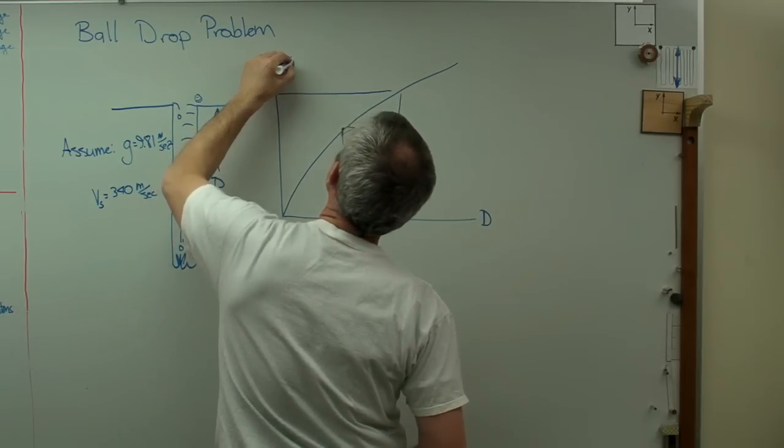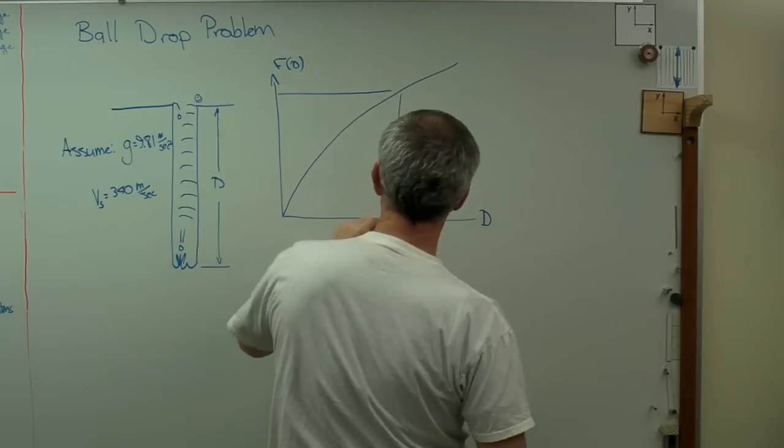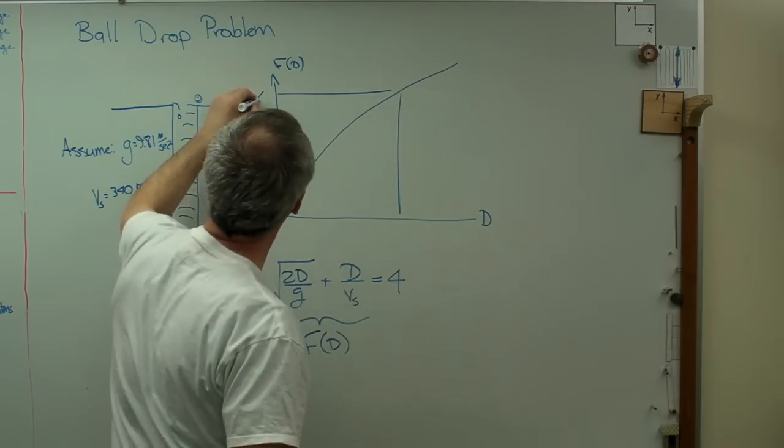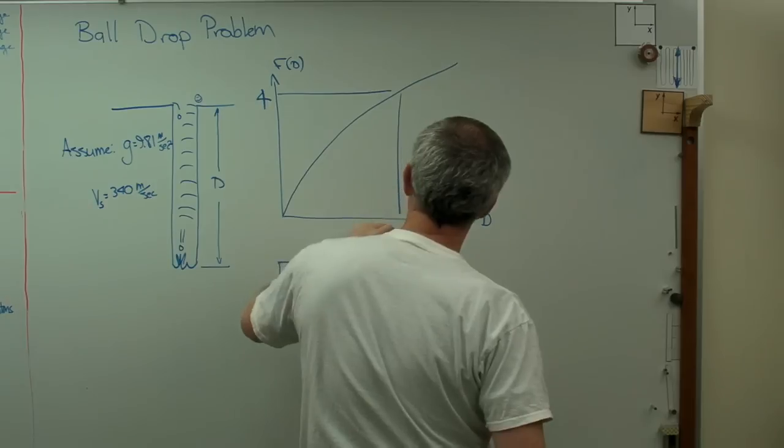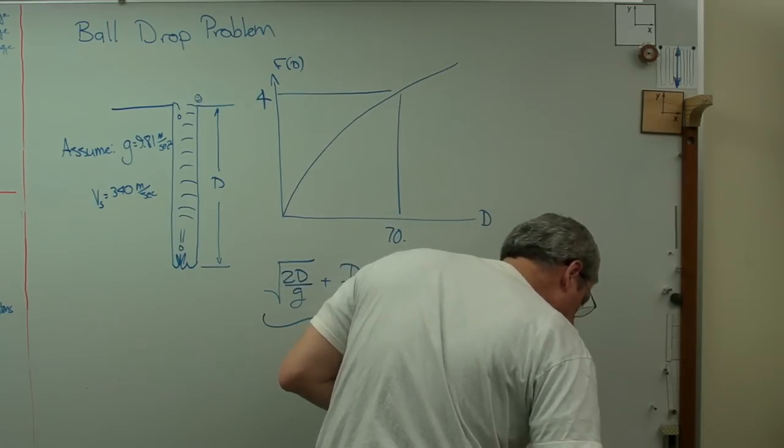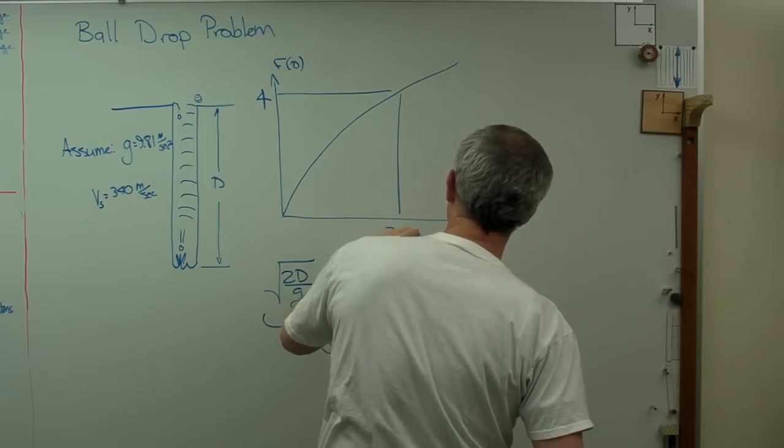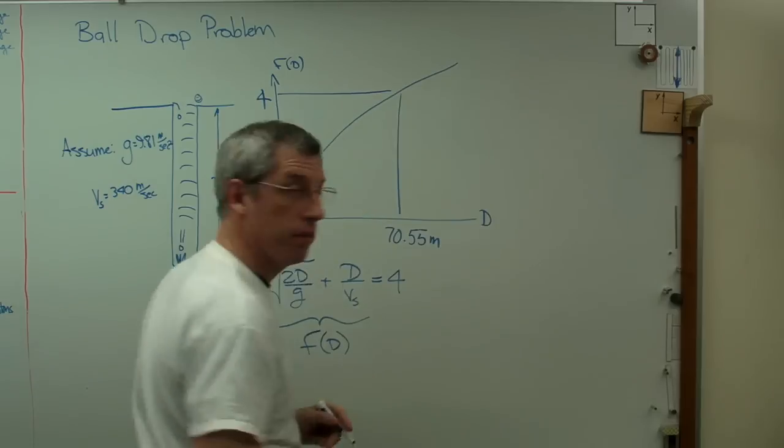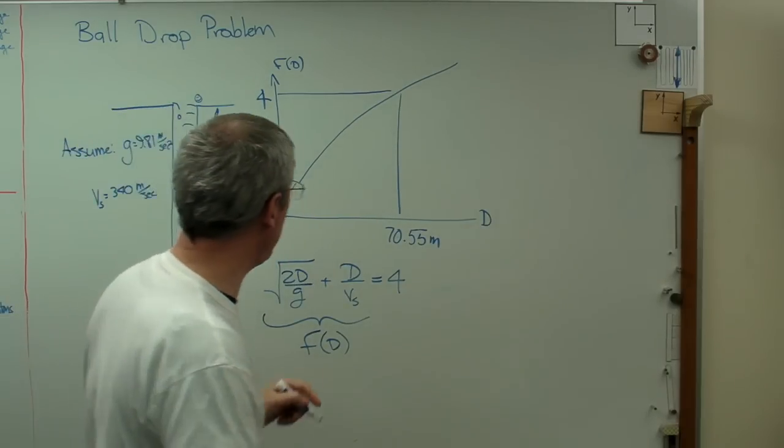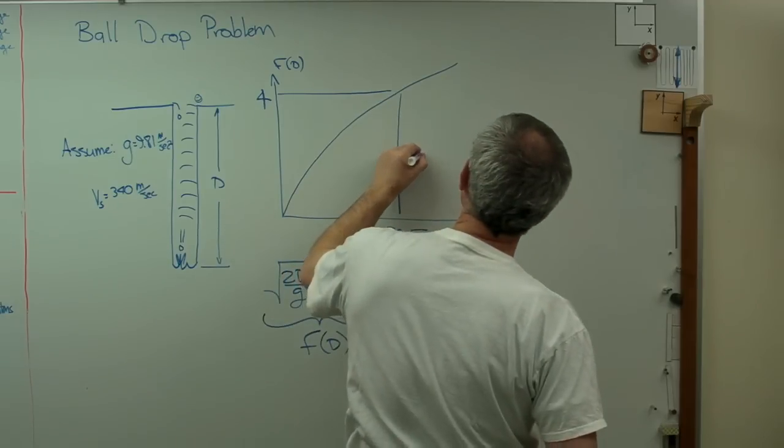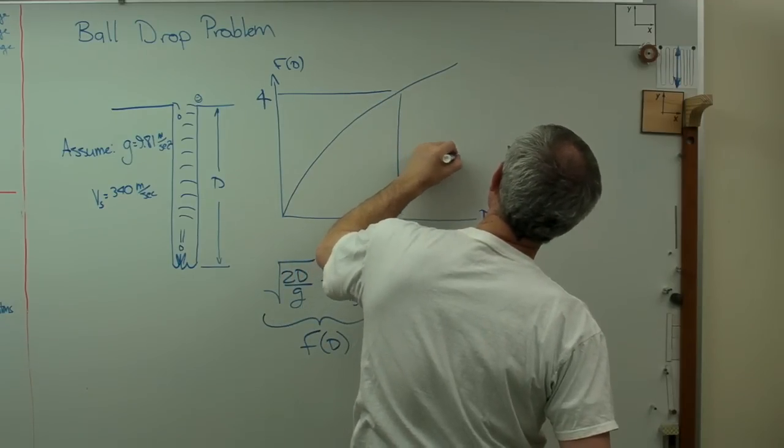If you run the numbers, when this equals 4, d equals 70.55 meters. That solves the problem. We now know just by graphing it, d is 70.55 meters.